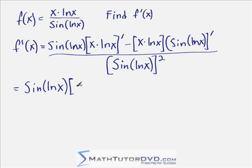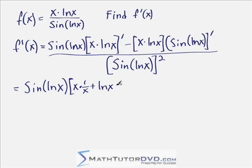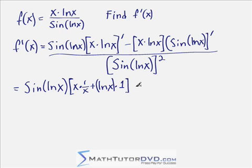So it's going to be the first term times the derivative of the second, which is 1 over x — the derivative of natural log is 1 over x — plus the second term, natural log of x, times the derivative of the first, which is just 1. This natural log of x is multiplied by that 1. Let's close the brackets to keep it straight.